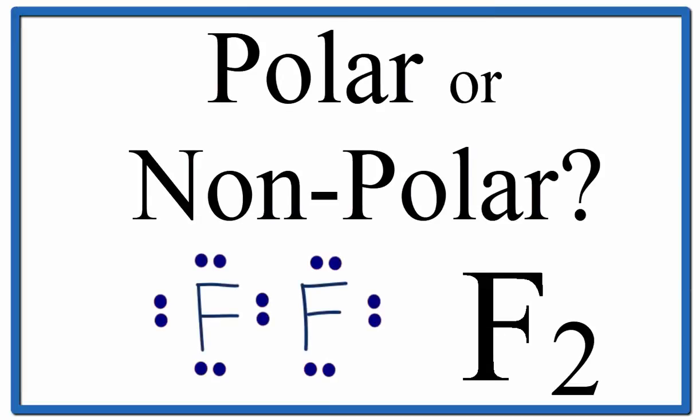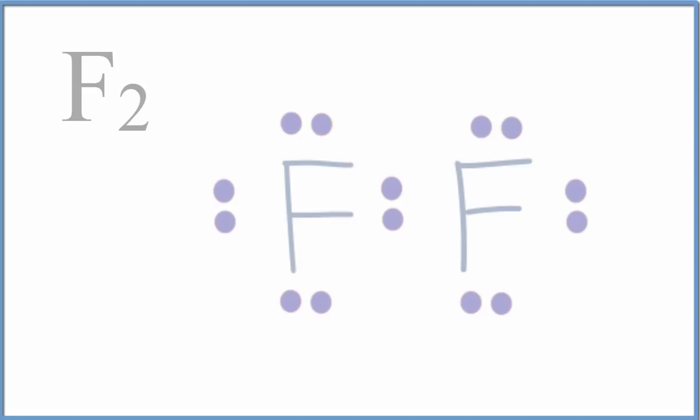To determine if F2 is polar or nonpolar, we'll start with the Lewis structure. That tells us where the valence electrons are around the molecule, and it helps us determine polarity.